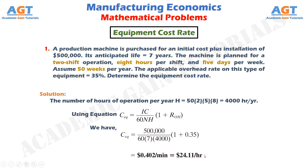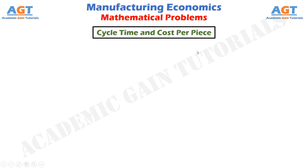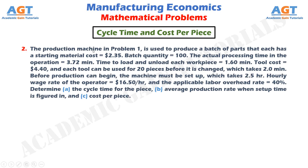Now let's look at another problem — on cycle time and cost per piece. The question states: the production machine from Problem 1 is used to produce a batch of parts, each with a starting material cost of $2.35. Batch quantity equals 100. The actual processing time in the operation equals 3.72 minutes. Time to load and unload each workpiece equals 1.60 minutes. Tool cost equals $4.40, and each tool can be used for 20 pieces before it is changed, which takes 2.0 minutes.